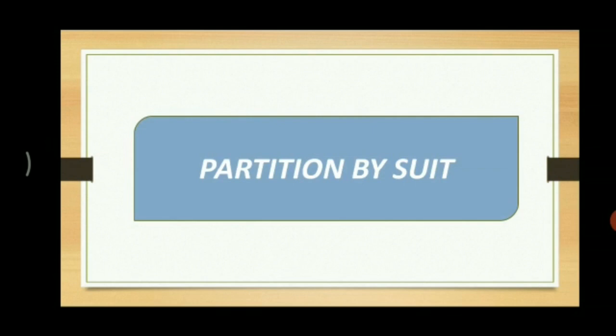Then comes the next mode, that is partition by suit. It says that partition can be affected by the institution of a suit, which is an unequivocal intimation of the intention to separate, and subsequently the severance of status takes place. Partition by suit is a very good mode through which partition can occur. The person who wants can file a suit in a competent court. This filing is the intimation that I need a partition. And the decree of the suit will be the basis for severance of status.